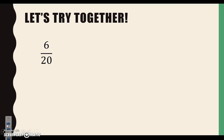Before we do, it's important to note that when we're trying to put a fraction in simplest form, we're going to have to divide the numerator and the denominator by the same number to get the fraction as low, or as small, as it can possibly go. To do that, we have to list the factors of both the numerator and the denominator to see what they have in common.